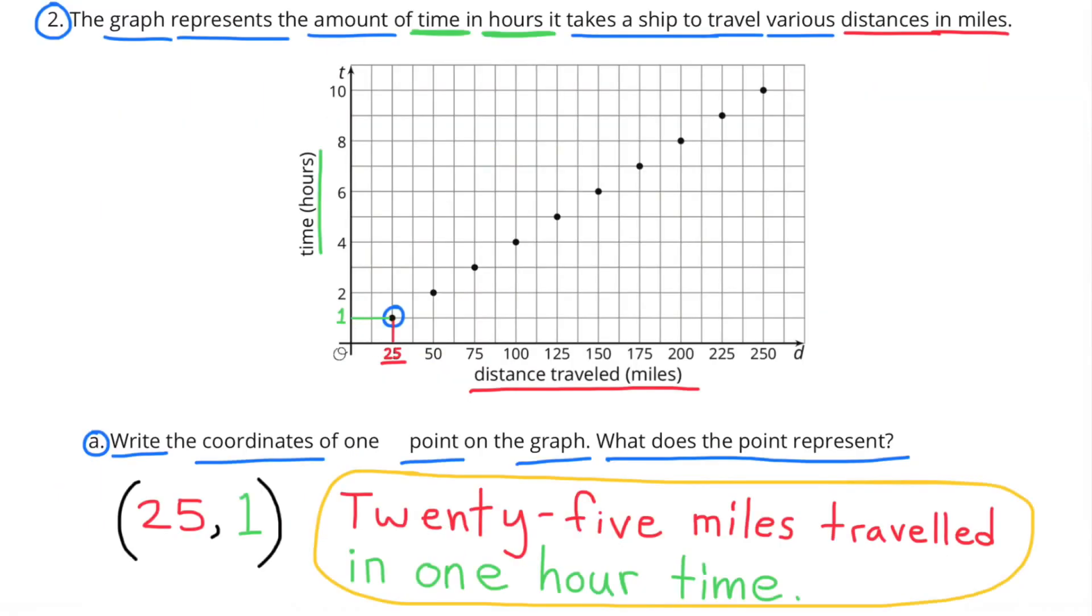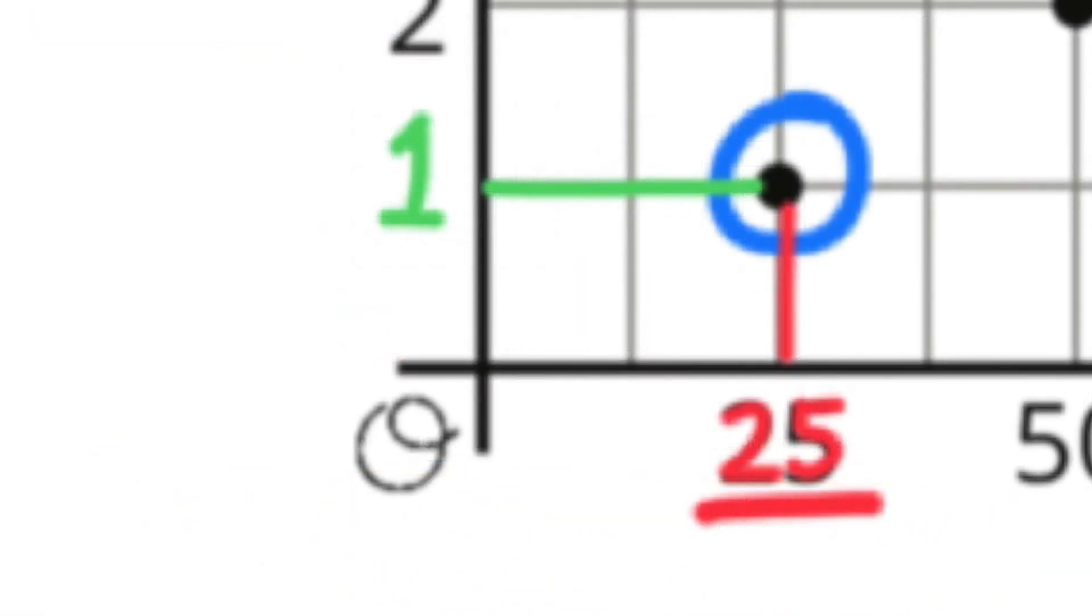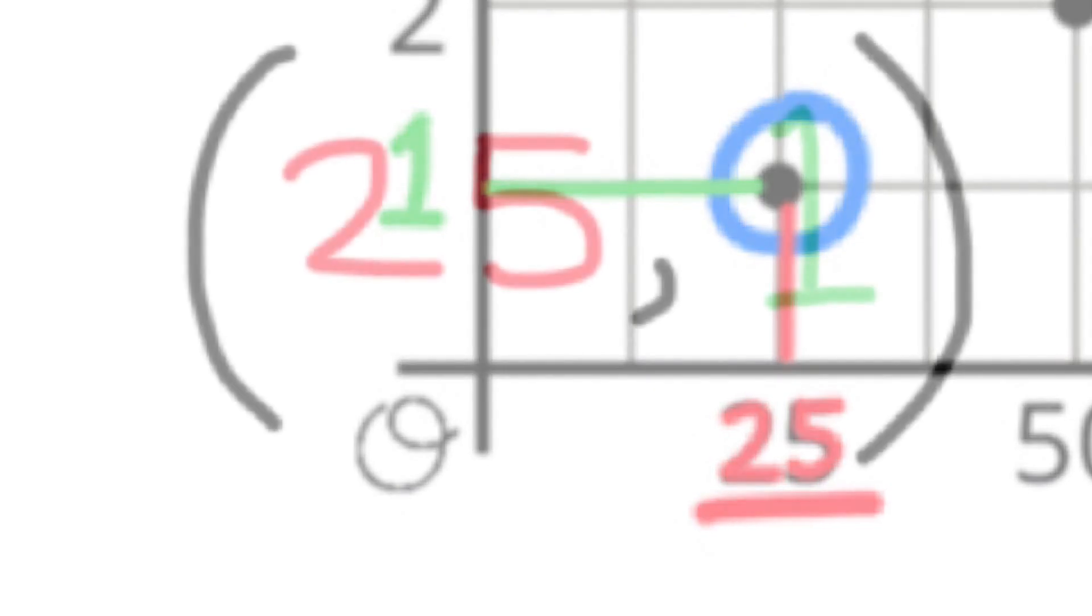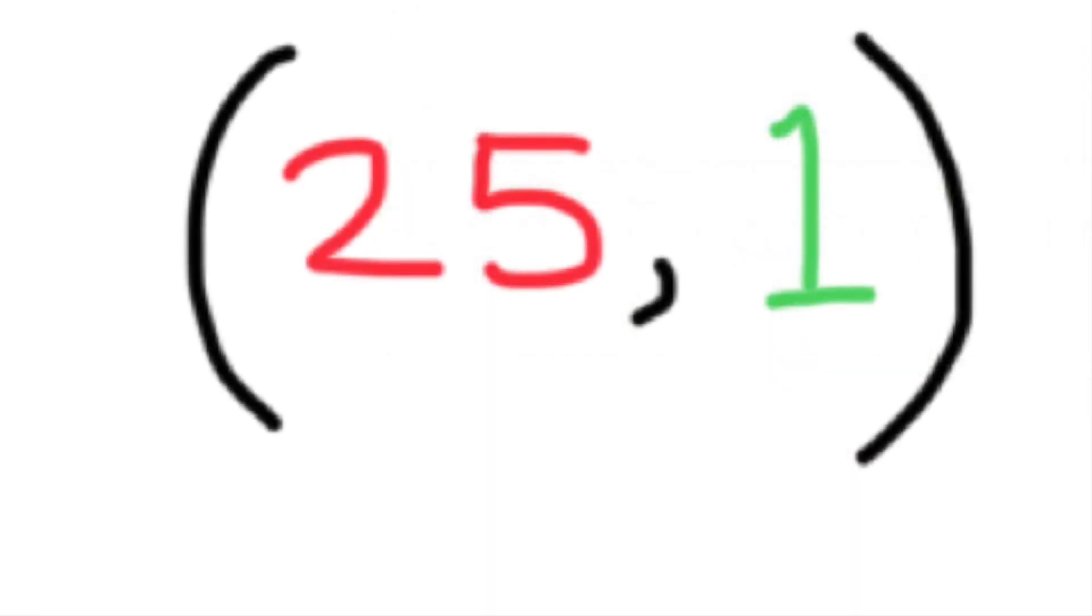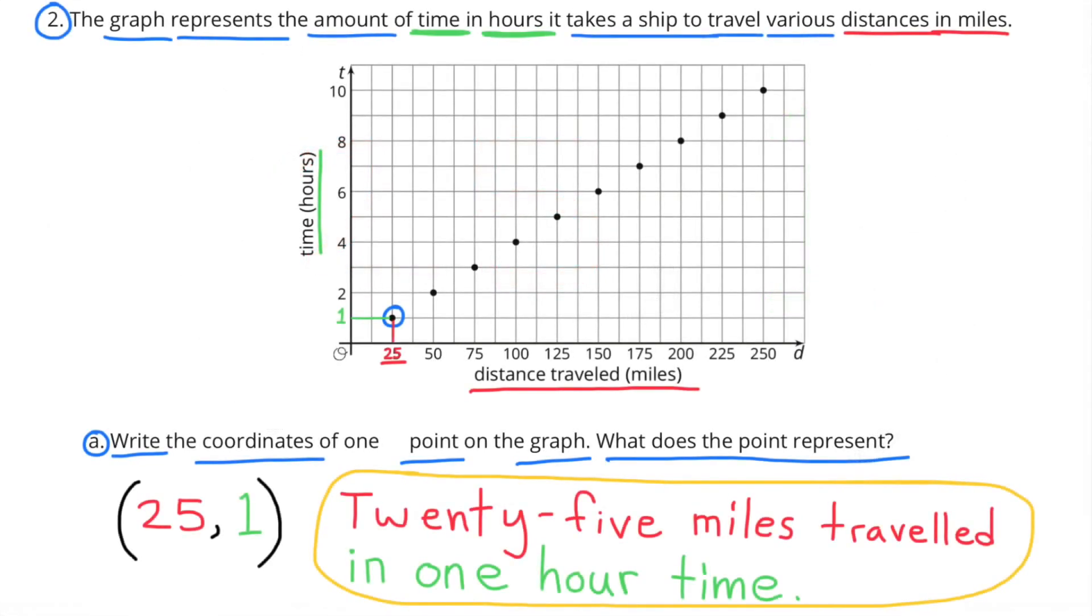Number 2. The graph represents the amount of time in hours it takes a ship to travel various distances in miles. Part A. Write the coordinates of one point on the graph. What does the point represent? I wrote the coordinates for the first point in the bottom left-hand corner. The coordinates are 25 and 1, and what this means is, 25 miles was traveled in one hour time.